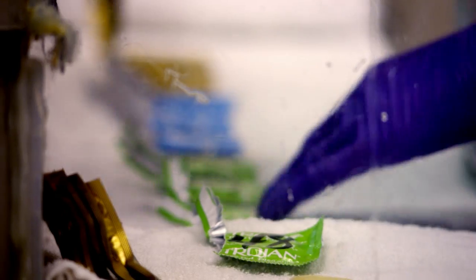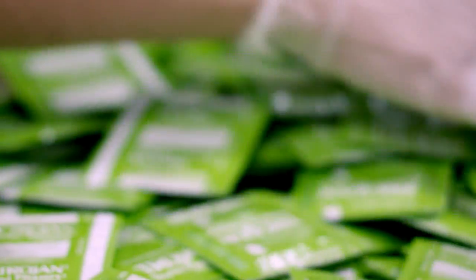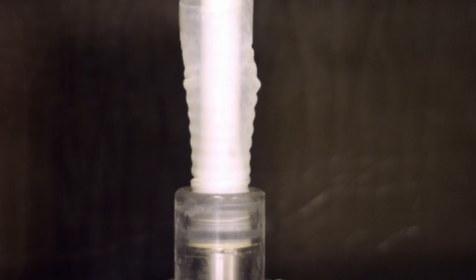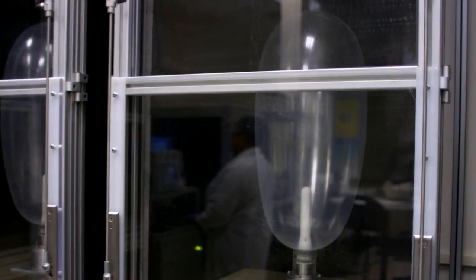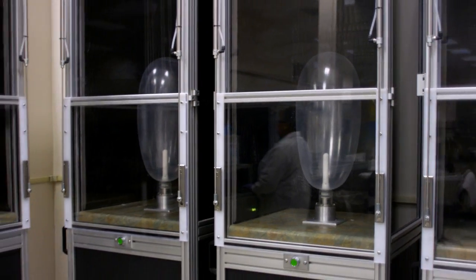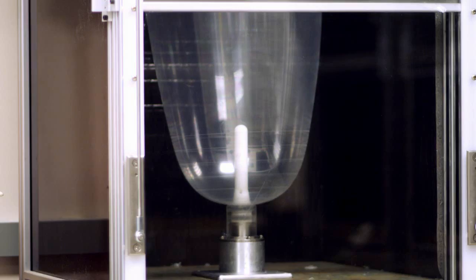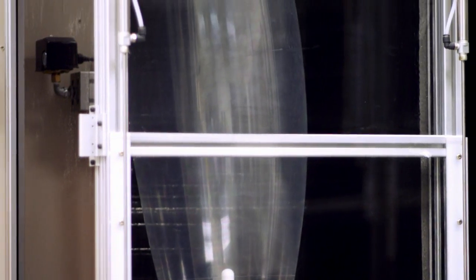This batch here is being opened from the foil and tested. One of the coolest tests is the air inflation test, where the condoms are inflated to test for elasticity and strength. These condoms here can typically handle being inflated at 25 liters of air per minute. That's greater than the amount of air it would take to inflate a basketball.